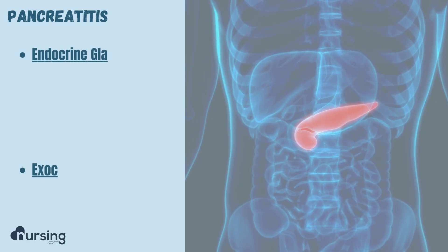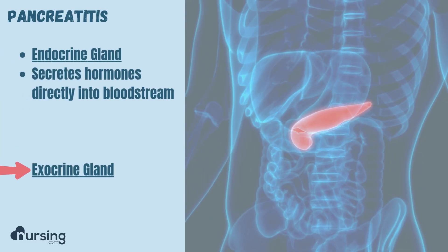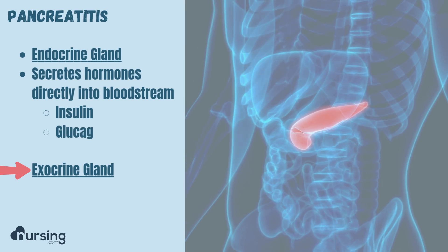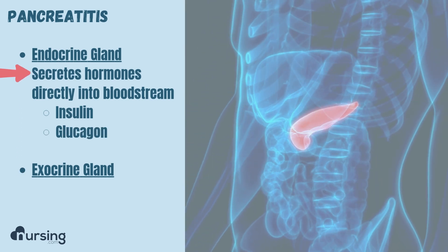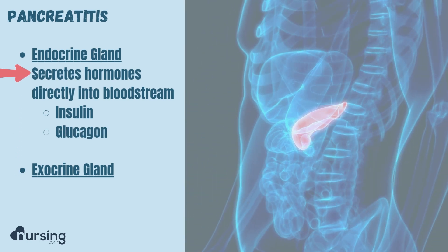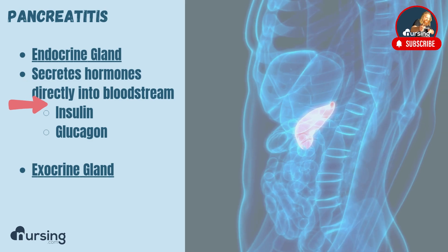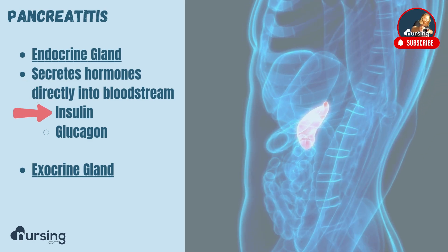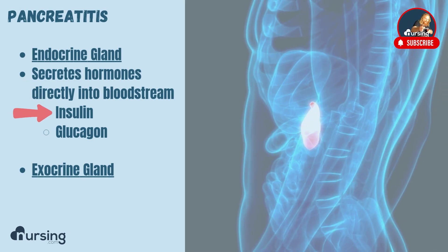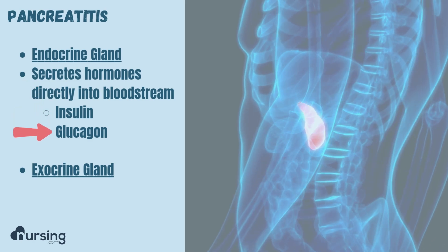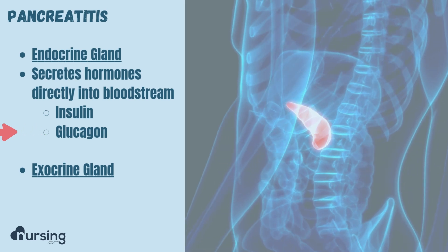The pancreas is both an endocrine gland and an exocrine gland. Endocrine gland means it secretes hormones directly into the bloodstream — those are insulin, which decreases blood glucose, and glucagon, which increases blood glucose.